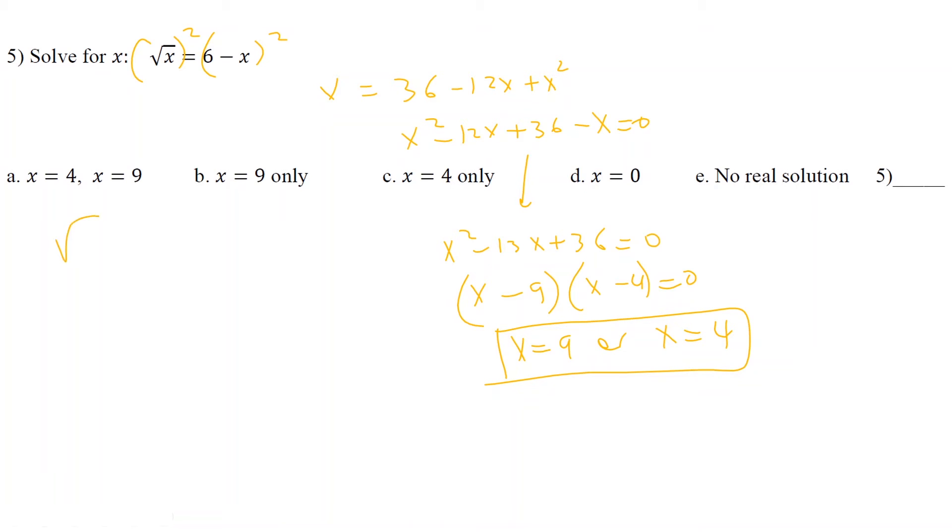So let's do for 9. For 9 here. So square root of 9 equals 6 minus 9. 3 equals negative 3. So 9 does not work. We must reject it. For 4, let's double check that. So square root of 4 equals 6 minus 4. So 2 is equal to 2. That works. So our only answer is C, x equals 4. Next.